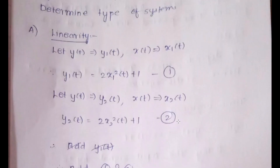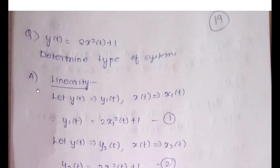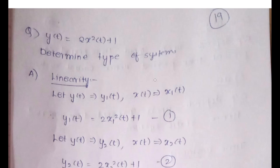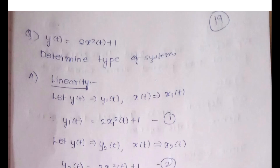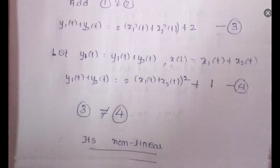To summarize the linearity check procedure: replace y(t) with y₁(t) and x(t) with x₁(t); replace y(t) with y₂(t) and x(t) with x₂(t); add equations 1 and 2 to get equation 3. Then set y(t) = y₁(t)+y₂(t) and x(t) = x₁(t)+x₂(t) to get equation 4. Compare equations 3 and 4 — if they are the same, the system is linear; if not, it is non-linear.